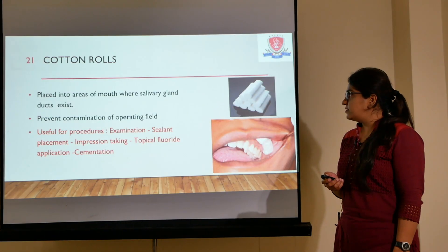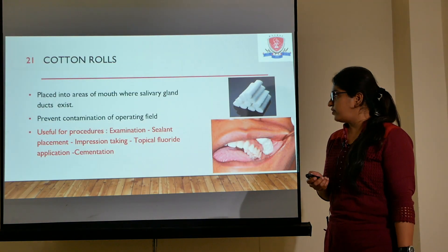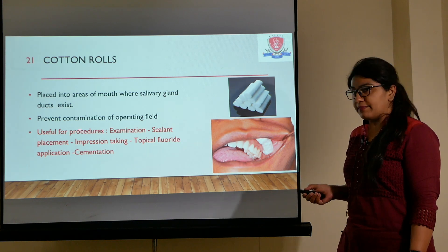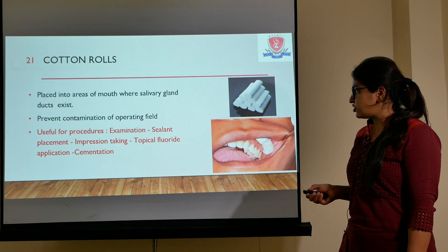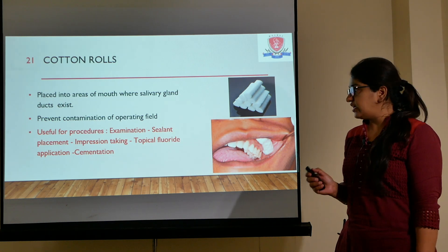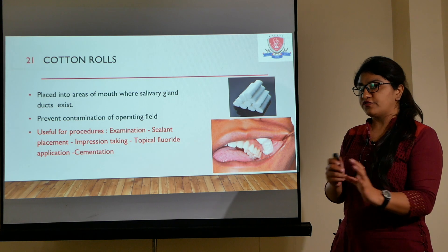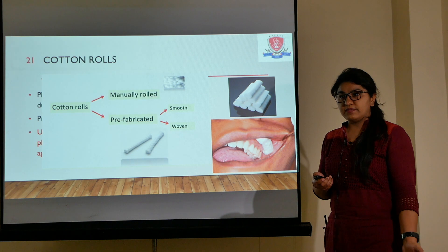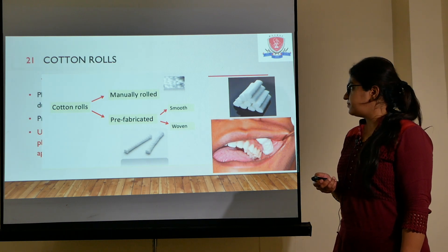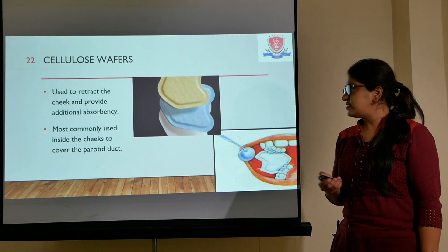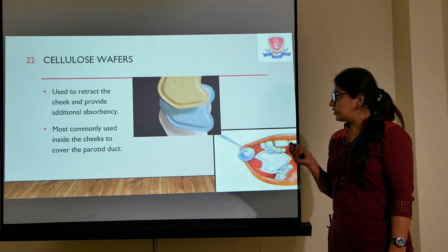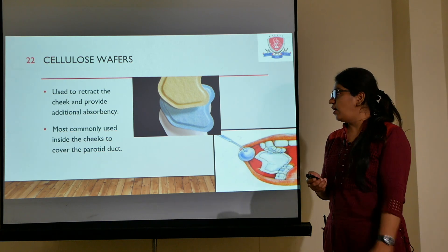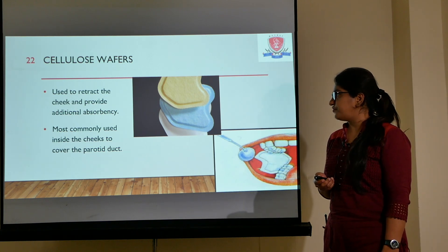Absorbents include cotton rolls, which are the most common ones. They are mainly useful for procedures like examination, sealant placement, impression taking, topical fluoride application, and cementation — just for these procedures, not for operative procedures. They can be manually rolled or are available as prefabricated. Then cellulose wafers are mainly used for the parotid gland opening — they are placed in the cheek so that secretion from the parotid duct can be blocked, giving a moisture-free environment.